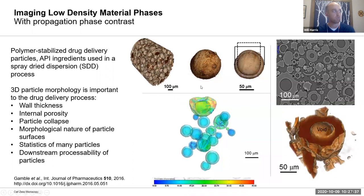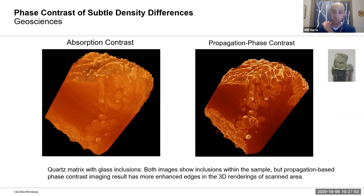Phase contrast can help highlight interfaces between materials of similar densities and particularly low-Z phases. We've started doing a lot recently in the pharmaceutical world — looking at drug delivery particles that exist down on the micro-to-nano scale and how their 3D morphology affects drug delivery behavior. In the geosciences, where we often have multiple mineral phases of pretty similar density, phase contrast can suddenly provide nice highlighting of boundaries between different regions.